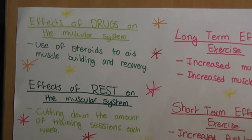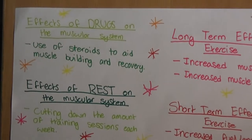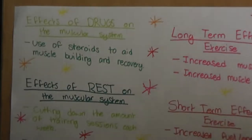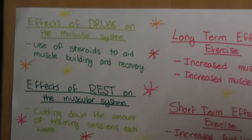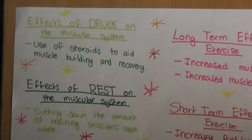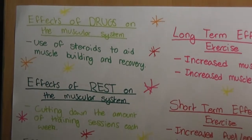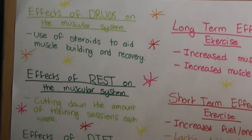We are studying 1.2.4, the muscular system. Effects of drugs on the muscular system: use of steroids to aid muscle building and recovery.